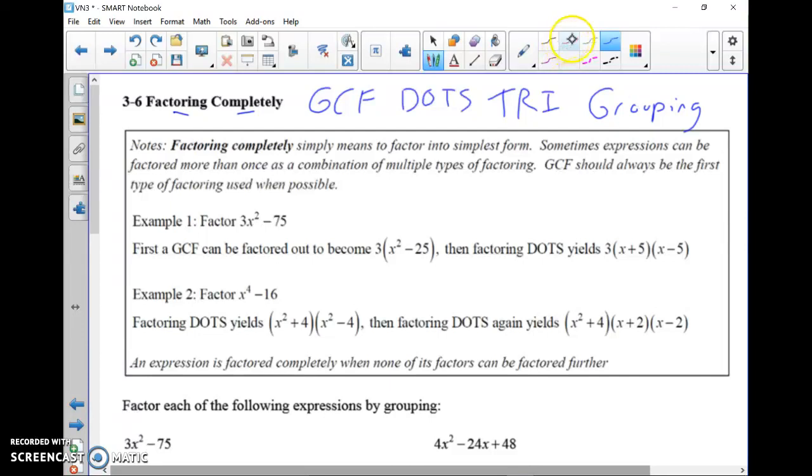You'll see a lot of times a combination of a GCF and a DOTS, or a GCF and a trinomial, or a GCF and grouping. A lot of times, GCF is where these things will start. For example, factor 3x² - 75.